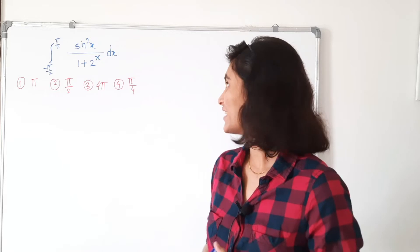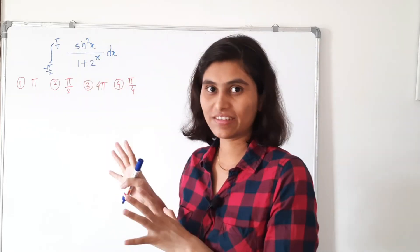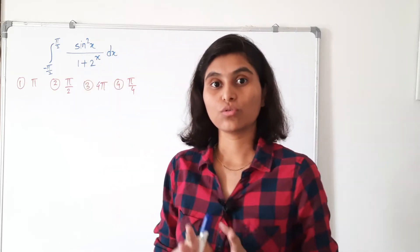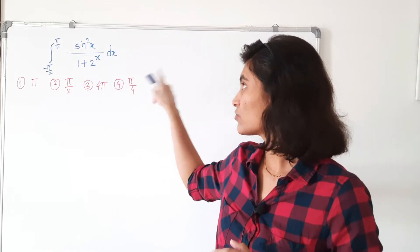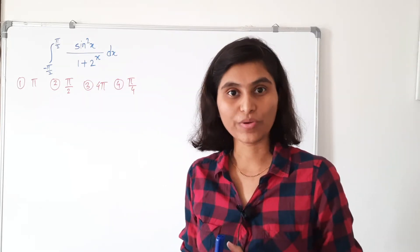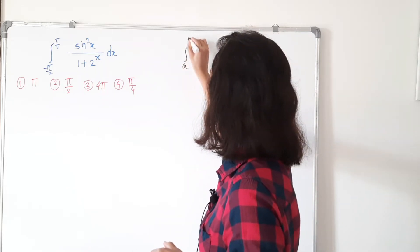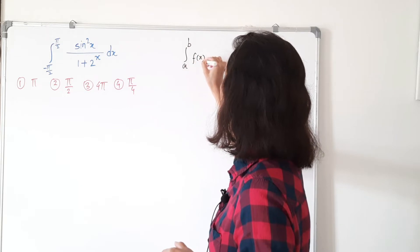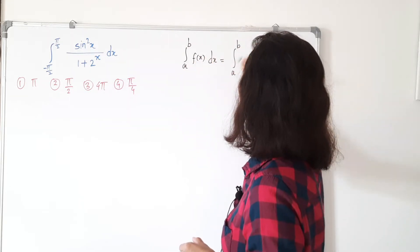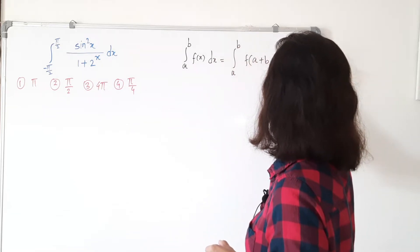All of us know that we can find the integration of sin²x very easily, but there is some function in the denominator. To get rid of this 1 plus 2 raised to x, we just have to use one important property of definite integrals: the integration from a to b of f(x) dx is equal to the integration from a to b of f(a + b − x) dx.